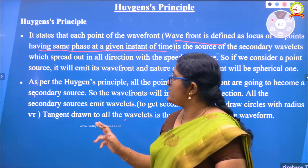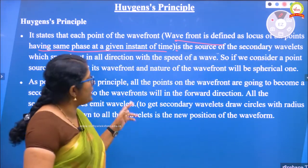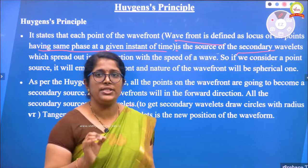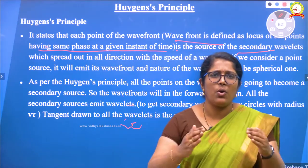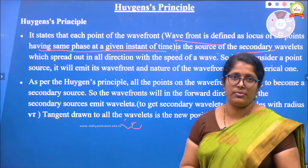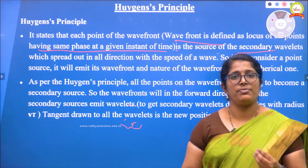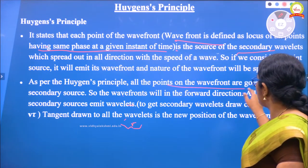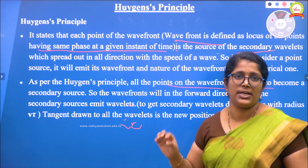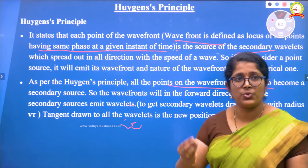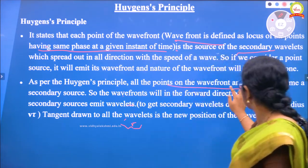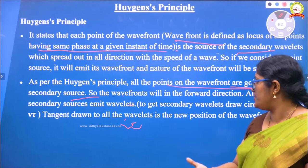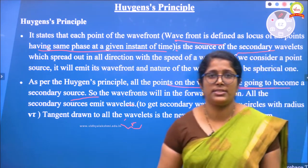According to Huygens, each wavefront is the source of secondary wavelengths which spreads in all directions with the speed of the wave. If we consider a point source, the wavefront will be moving forward. That means all the points of the wavefront are going to become the secondary sources. Each point of the wavefront is acting as the source of secondary wavelengths. The wavefront will be moving forward and secondary wavelengths will be emitting.